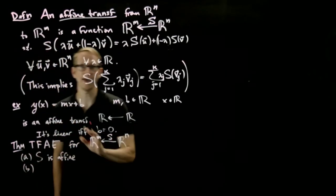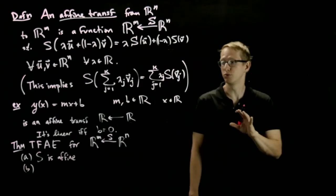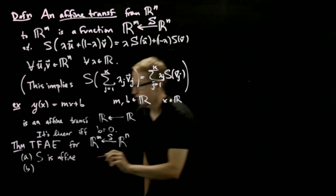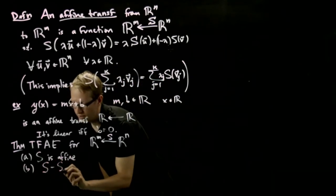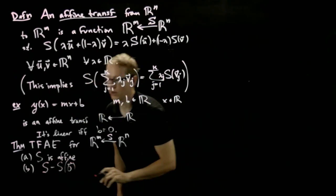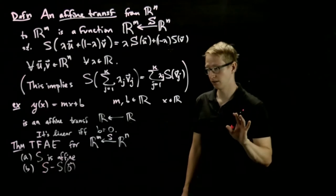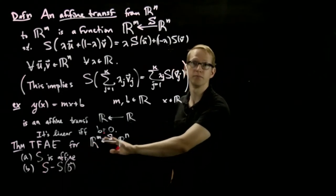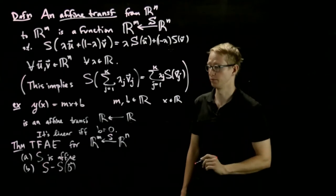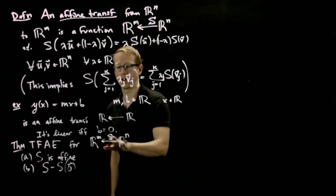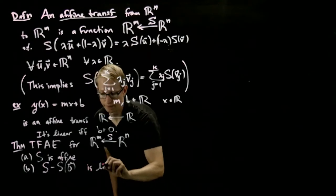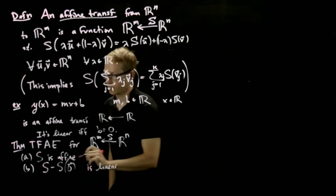If I take the function s and subtract s(0) from it, so if I take s - s(0), now this is a function in the sense that if I take any x, the function is defined by s(x) - s(0). So this is also a function from R^n to R^m. If this is linear.